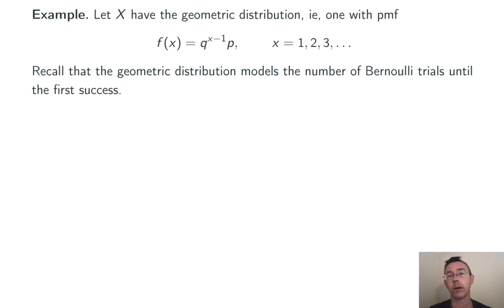Let's see this with a more complicated example. Suppose x has a geometric distribution. That is it's a discrete random variable with this probability mass function: f(x) equals q to the (x minus 1) times p where x can be 1, 2, 3, and so on. p is between 0 and 1. That's the probability of success on any given Bernoulli trial. q is 1 minus p. That's the probability of failure on any given Bernoulli trial. Here x is modeling the number of trials needed until the first success when we're doing repeated Bernoulli trials.